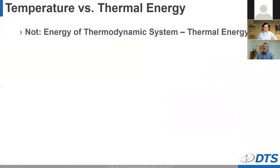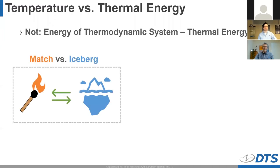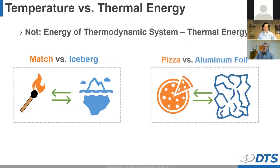Temperature is not the equivalent of the thermal energy of a system. For example, a burning match has a much higher temperature than an iceberg, but the total heat energy within an iceberg greatly exceeds the match. This is because temperature is an intrinsic value — a value that does not depend on the quantity of matter. A fun example: if you place cold pizza onto aluminum foil, put both in the oven and heat for 20 minutes, you can reach in and touch the foil. While the foil has a high temperature, its low mass means it also has low thermal energy, and you're not burned. Just don't touch that pizza.